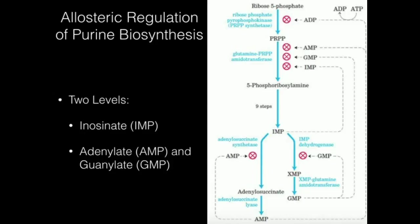For AMP synthesis, the committed step is adenylosuccinate synthetase, and for GMP the committed step is IMP dehydrogenase. Notice that AMP, the end product of the left pathway, is going to inhibit its own synthesis — AMP is going to inhibit adenylosuccinate synthetase.